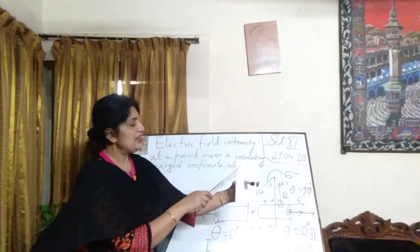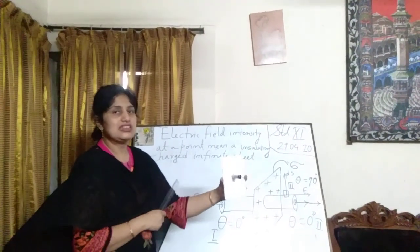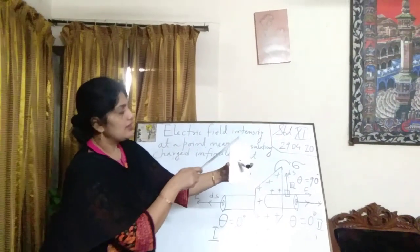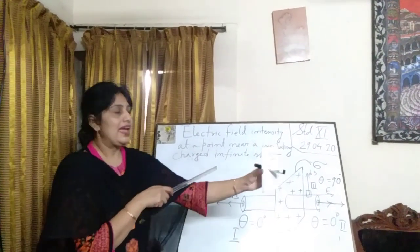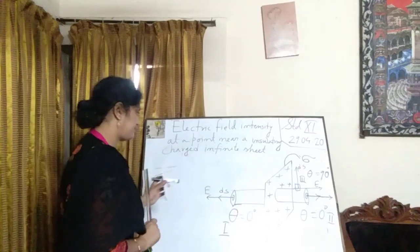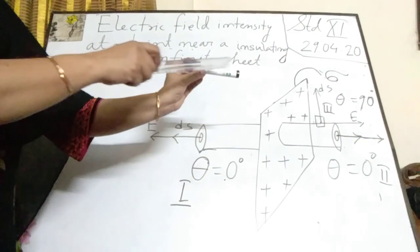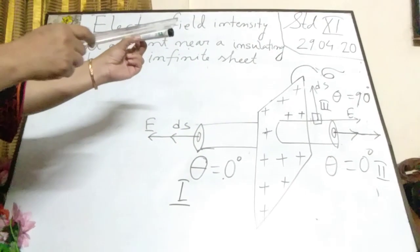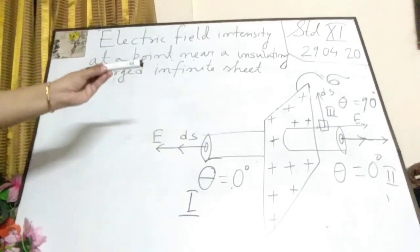This is the infinite sheet and this is the Gaussian surface — a cylindrical Gaussian surface — and this is the direction of the electric field intensity. The electric field intensities are parallel to each other and they are perpendicularly outward from the sheet. Since there is charge on both portions of the sheet, in the frontal part the electric field intensity is perpendicularly outward, and in the back part also the electric field intensity is perpendicularly outward. The cylindrical Gaussian surface has three surfaces: this flat part, this flat part, and the curved portion.